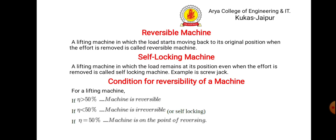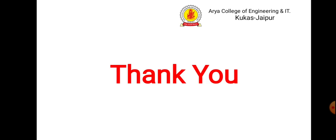Next is reversible machine: a lifting machine in which the load starts moving back to its original position when the effort is removed. Self-locking machine: one in which the load remains at its position even when the effort is removed — for example, a screw jack. The condition for reversibility: if efficiency is more than 50% it is reversible; if less than 50% it is irreversible or self-locking; if equal to 50% the machine is on the point of reversing. That's all about this topic.